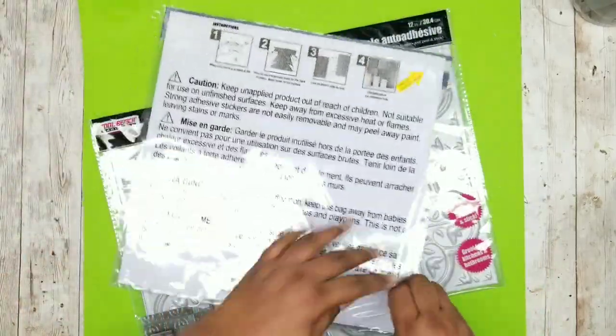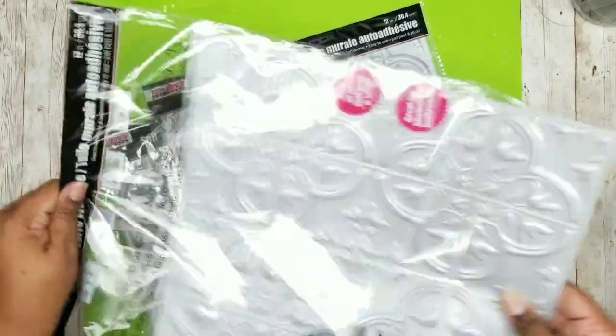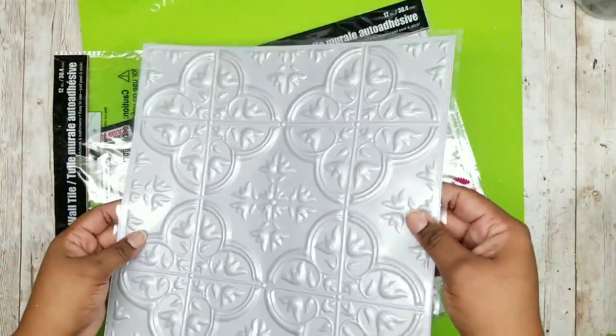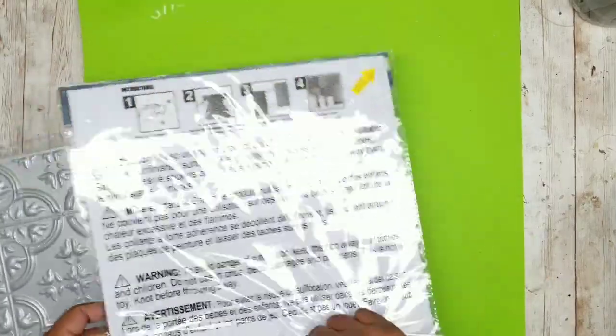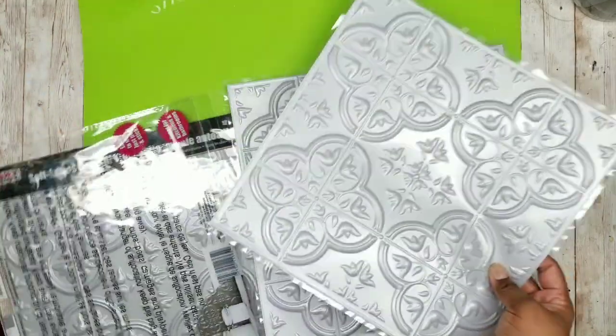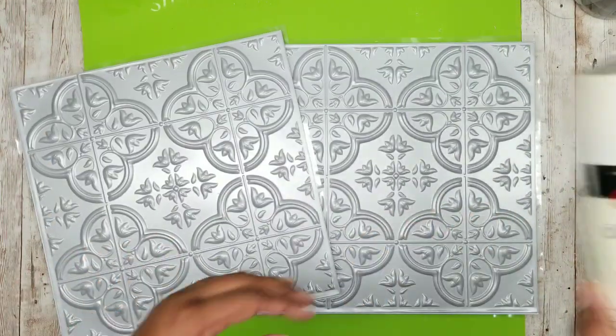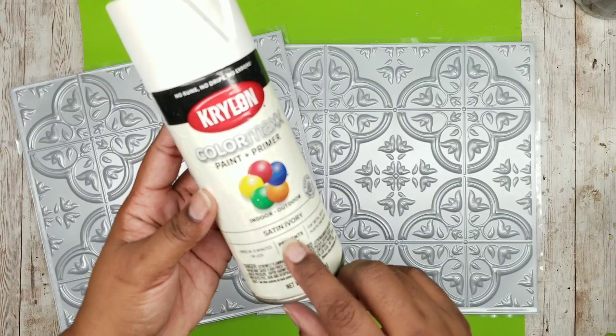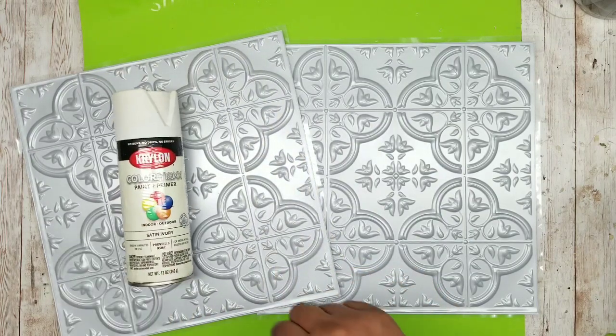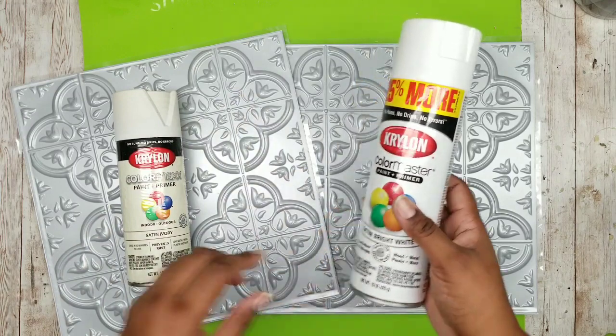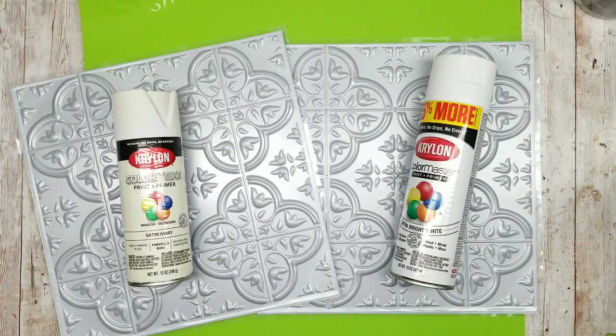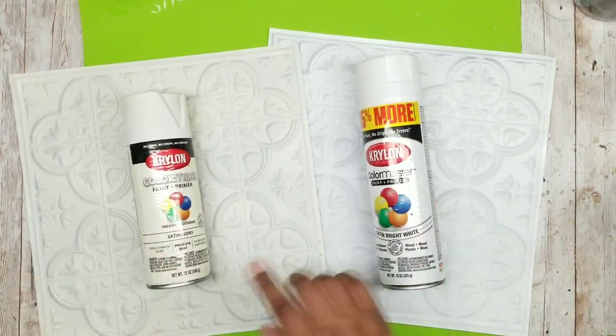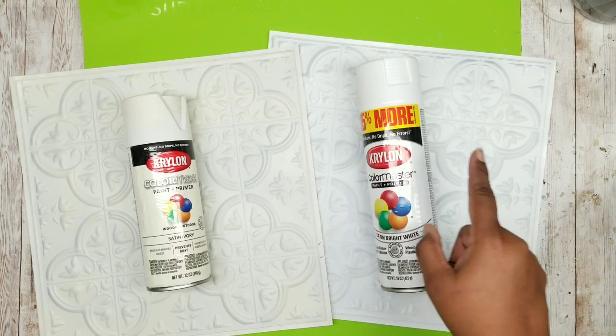Now we can start working on our tiles. We're just going to go ahead and start unpackaging the tiles and removing all of the outer insert and we are going to leave the peel and stick on the back of these tiles as we work with them. I'm only going to be painting two of these tiles and leaving one silver. One I'm going to be painting with this satin ivory spray paint and the other I will be painting with some white satin spray paint. Here are both of our pieces all nice and sprayed and ready to go for our projects.